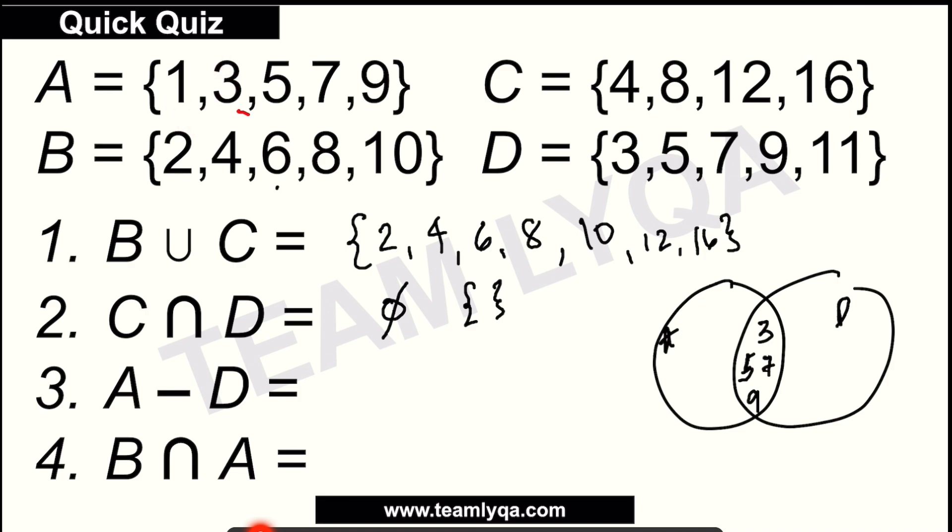Now, what's unique to set A that's not in set D? The 1, it's not there. So I'll put 1 here. And of course, in set D, it has 3, 5, 7, 9 in the middle. It's just 11 that's unique to it. Now this is where some people get confused. Like who do we follow? Again, the one that comes first. So we're looking for what's in set A but not in set D. So that would be just this shape right here. Let's make it red so it's clearer. So our answer, the contents of this set is just 1.